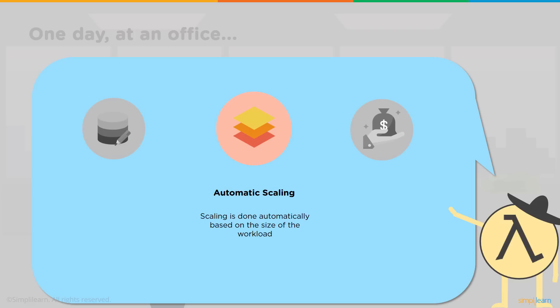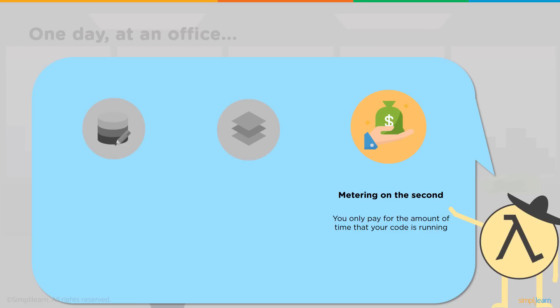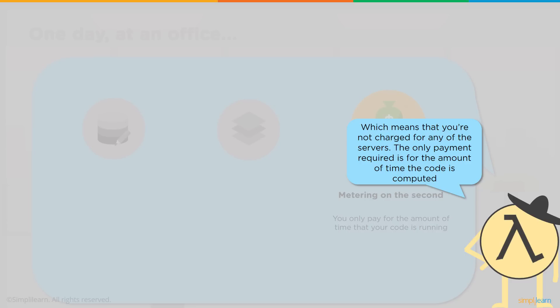Our code runs in parallel and processes each trigger individually, scaling precisely with the size of the workload. Scaling is done automatically based on workload size. For billing, Lambda is metered by the second — we only pay for the amount of time our code is running. We are charged for every 100 milliseconds our code executes and for the number of times our code is triggered. We pay nothing when the code is not running.